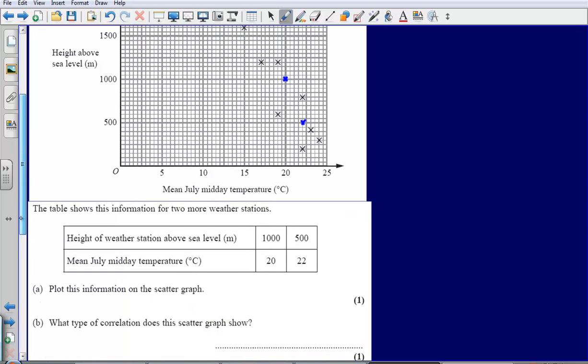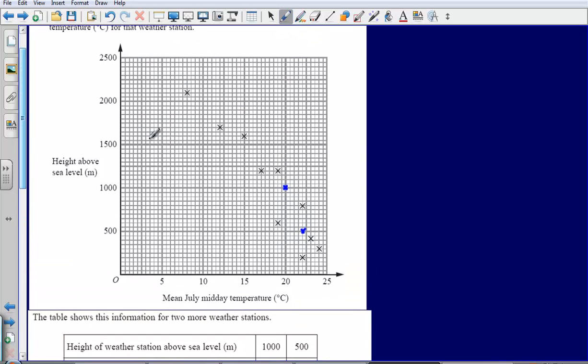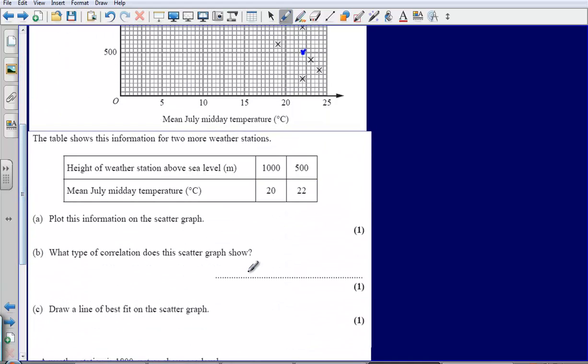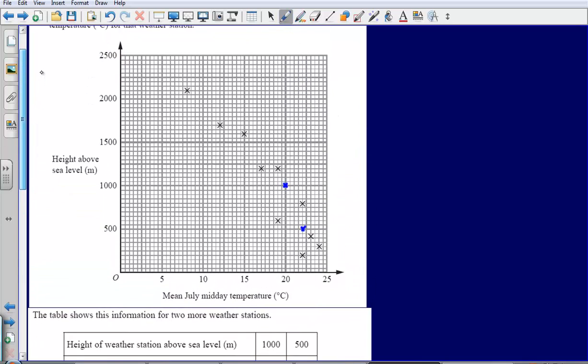Part B asks you, what type of correlation does this scatter graph show? We can see that the plots are coming in this downward direction. They're coming downwards as you go along. So what you could say is that it is negative. As the temperature is going up, the height of the weather station above sea level is coming down.